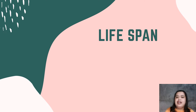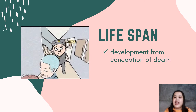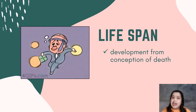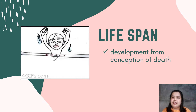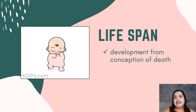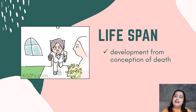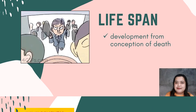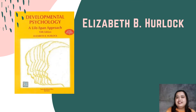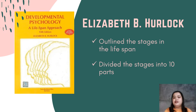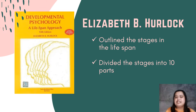Lifespan is the development from conception to death — not birth, but conception. That means from the fertilization stage, it is already included in the lifespan. According to Elizabeth B. Hurlock, in her book Developmental Psychology: A Lifespan Approach, she discussed the different stages of lifespan and divided them into 10 different stages.